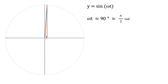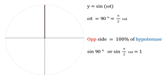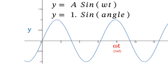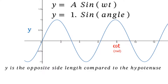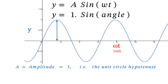As the angle in the right angle triangle approaches 90 degrees or pi over 2 radians, the sine function approaches 1, which means the opposite side length is nearly as big as the hypotenuse length. When omega t equals 90 degrees or pi over 2 radians, the opposite side and the hypotenuse are the same length, and the right angle triangle has no width. So y equals a sine omega t, which is 1 times the sine of an angle for this particular waveform, because the amplitude is 1, which is the unit circle radius or the hypotenuse length.